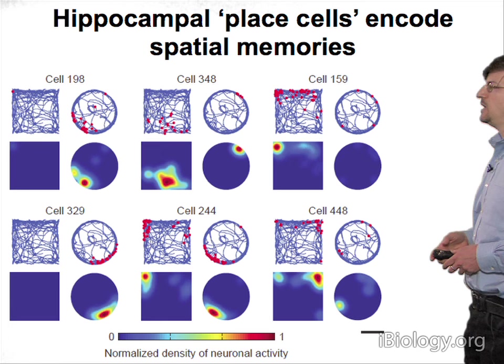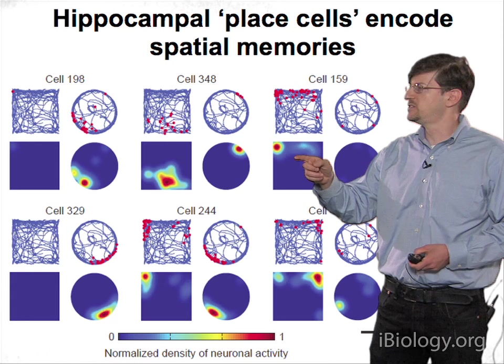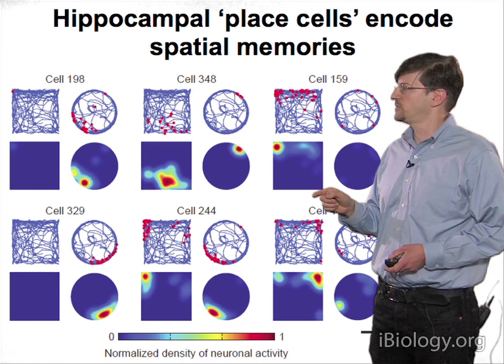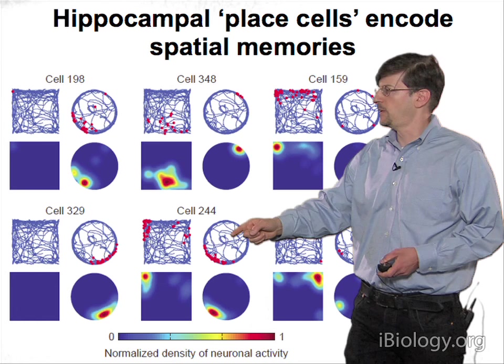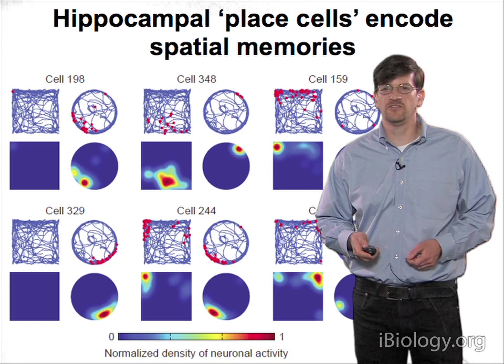There has been a lot of historical work on CA1 pyramidal neurons, which are known to encode aspects of the animal's location within its spatial environment — so-called place cells. We can see this optically: individual neurons fire preferentially in specific locations of the animal's enclosure. For example, cell 159 is preferentially active in one corner of a square box, but when the mouse is placed in a circular arena, cell 159 is not involved in that spatial representation. Other cells like cell 244 are active in both environments but with remapped place fields — demonstrating optical observation of place field remapping in awake behaving mice.